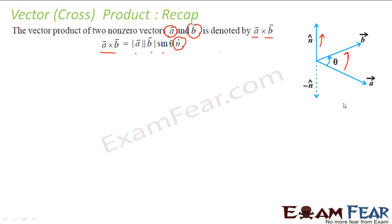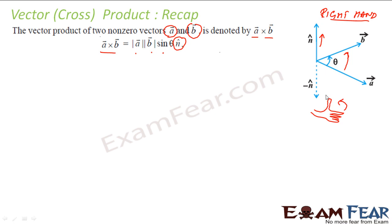To get the direction you use the right-hand rule: move your fingers from a to b and your thumb will point to the n direction. Take your right hand only — please note, right hand only. You move your palm from a to b, and you will see that the thumb gives the direction of a cross b. That is the n vector. So a cross b equals a·b·sin theta into n-hat.